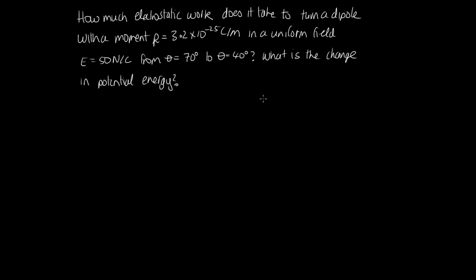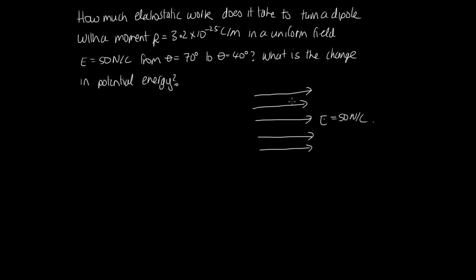Let's start by drawing a diagram. Here is our electric field with magnitude 50 N/C, and we have a dipole initially at 70° to the field, which then rotates to 40°, becoming more aligned with the field. The electrostatic work done equals the integral from the initial angle to the final angle of the torque with respect to θ.